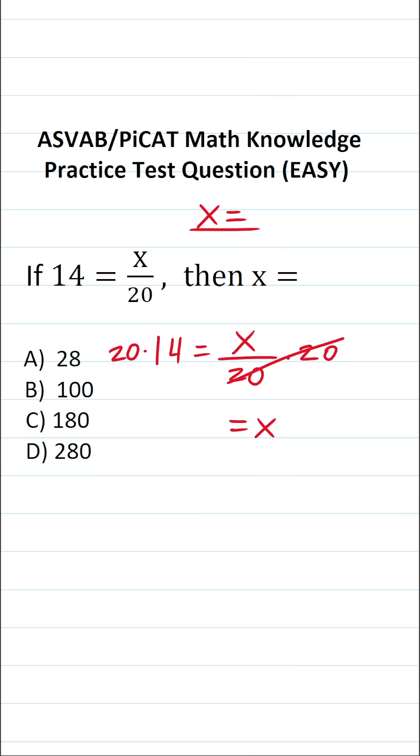We can see x is equal to 20 times 14. And I'm going to work this out by hand so as not to make a mistake. 4 times 0 is 0, 4 times 2 is 8. Before we start multiplication with this 1, we have to bring in a 0 placeholder.